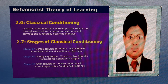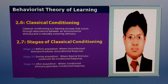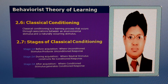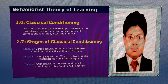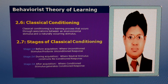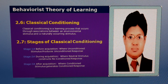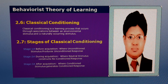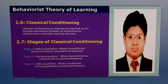Classical conditioning was discovered by Russian physiologist Ivan Pavlov in the 1890s. It is a learning process that occurs through associations between an environmental stimulus and a naturally occurring stimulus. In his famous experiment, Ivan Pavlov noticed dogs began to salivate in response to a tone after the sound had repeatedly been paired with presenting food. Pavlov quickly realised that this was a learned response and set out to further investigate the conditioning process.